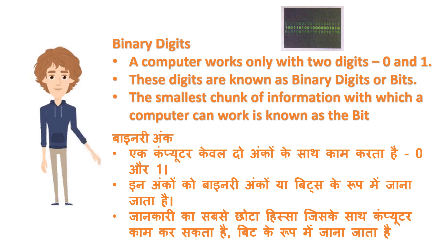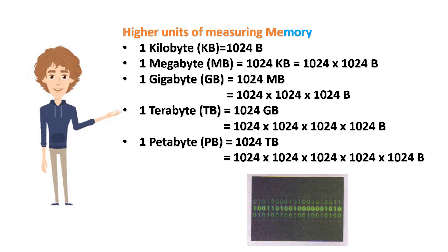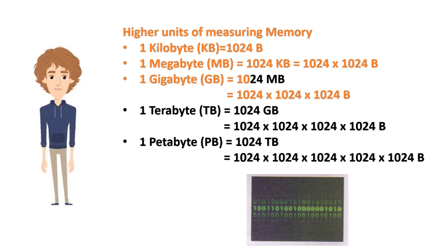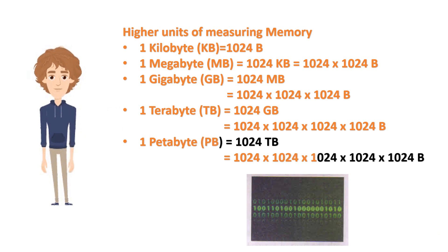Higher units of measuring memory: 1 Kilobyte (KB), 1 Megabyte (MB), 1 Gigabyte (GB), 1 Terabyte (TB), 1 Petabyte (PB).